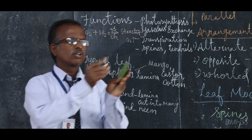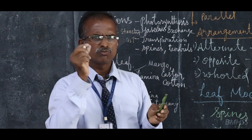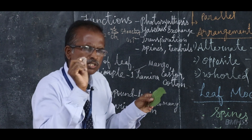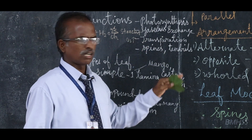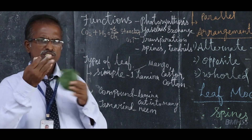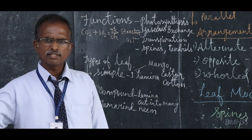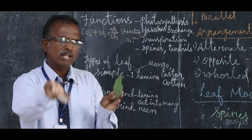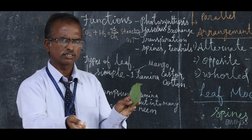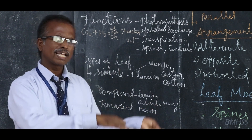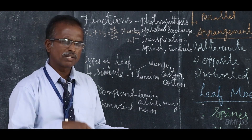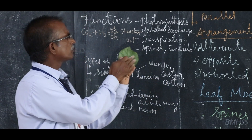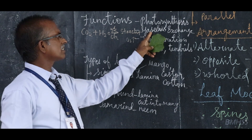Now, the ventral portion of the leaf bears very minute, invisible pores. Those pores are called stomata. Through the stomata, exchange of gases takes place. During daytime photosynthesis, the plant takes in carbon dioxide and releases oxygen. The opposite happens at night — plants respire, taking in oxygen and releasing carbon dioxide through the stomata. That is gaseous exchange.